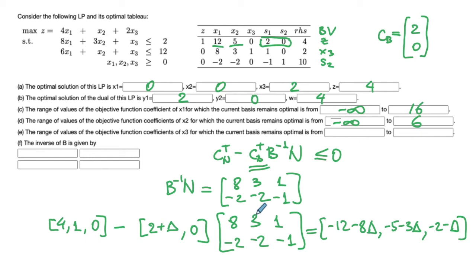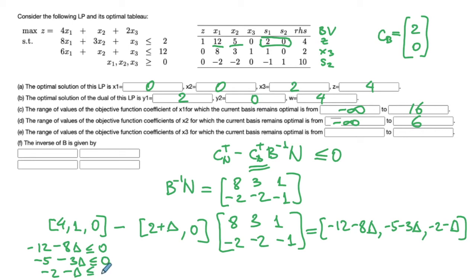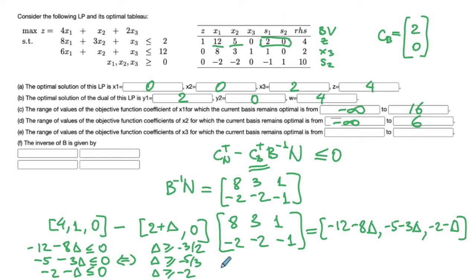This is the vector of non-basic variable coefficients after adding delta to c3, and every entry must be less than or equal to zero. Solving: -12 - 8*delta ≤ 0 gives delta ≥ -3/2; -5 - 3*delta ≤ 0 gives delta ≥ -5/3; and -2 - delta ≤ 0 gives delta ≥ -2. For all three to hold simultaneously, we take the largest lower bound: delta ≥ -3/2.